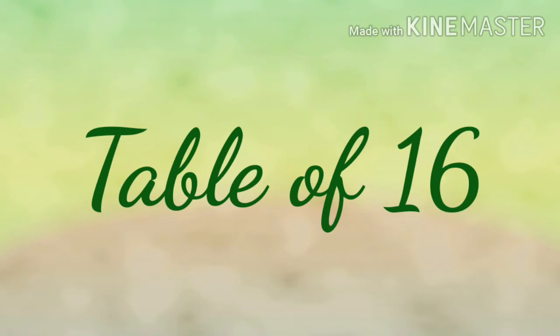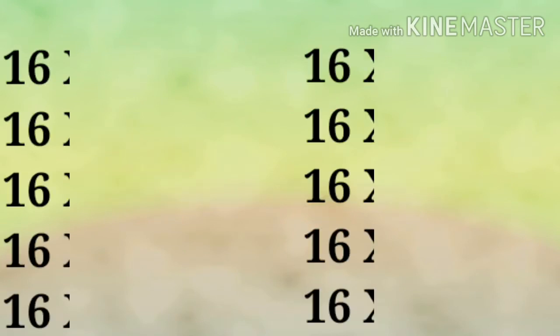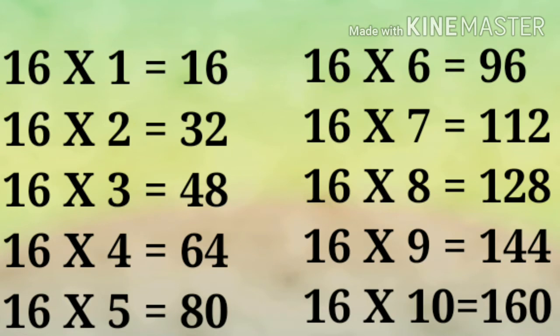Table of 16: 16×1 = 16, 16×2 = 32, 16×3 = 48, 16×4 = 64, 16×5 = 80, 16×6 = 96, 16×7 = 112, 16×8 = 128.